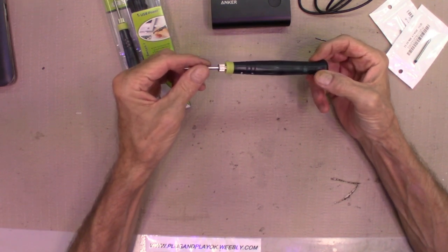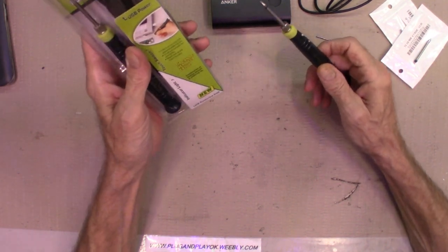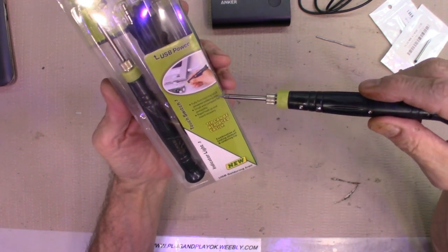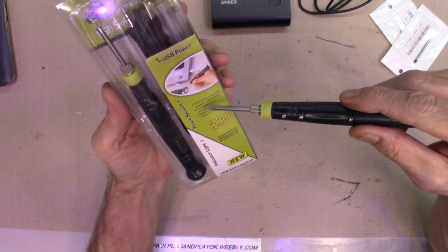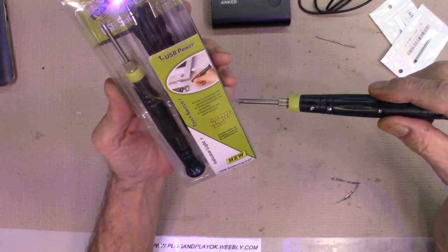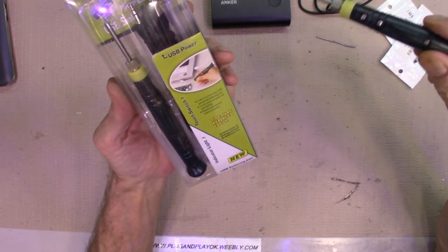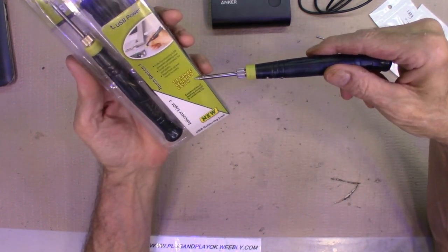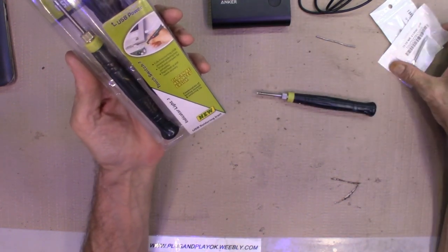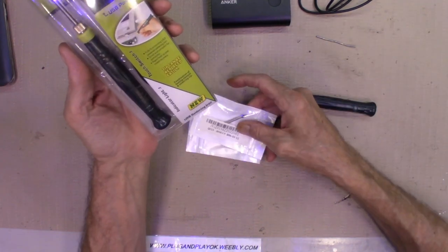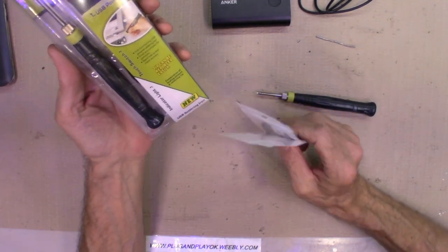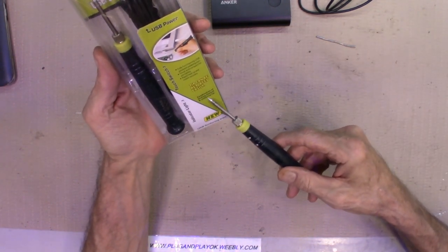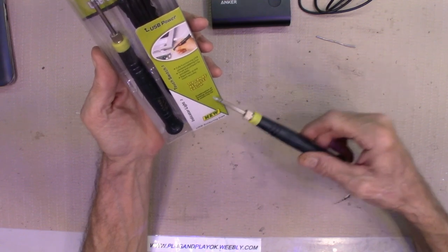So it says here: fully functioning USB powered soldering iron, rapid heat up, which it is, and instant recovery, which it does. Tip can be easily replaced. Yes it can. I bought me a couple extras because I do like this heating element and soldering tip.